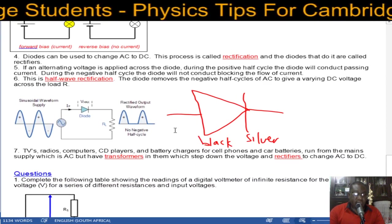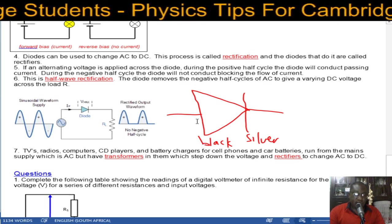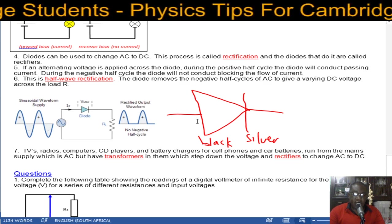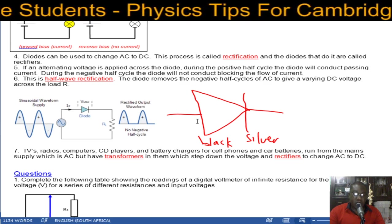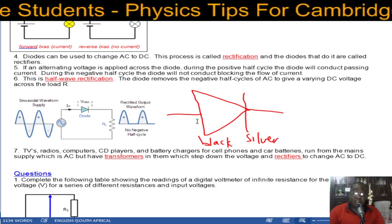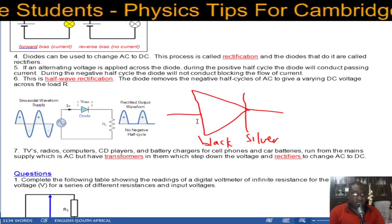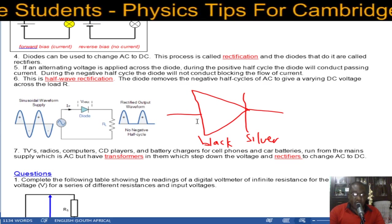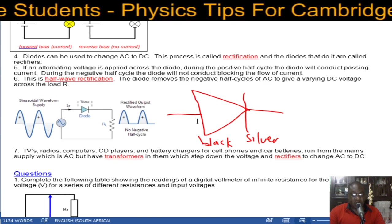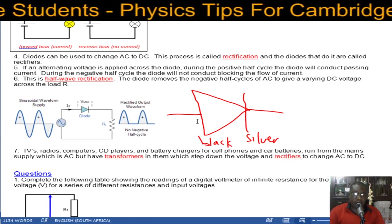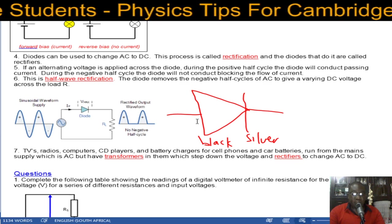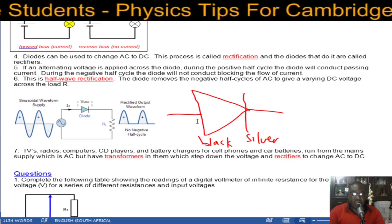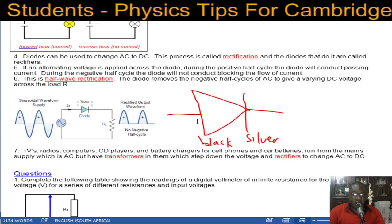TVs, radios, computers, CD players and battery chargers for cell phones and car batteries run on from the main supply which is AC but have transformers in them to step down the voltage and rectifiers to change the AC to DC. You need a transformer to step down the voltage and then you need a diode to change from AC to DC.